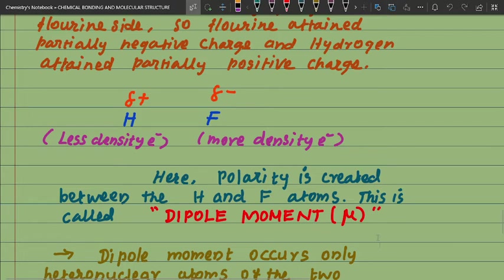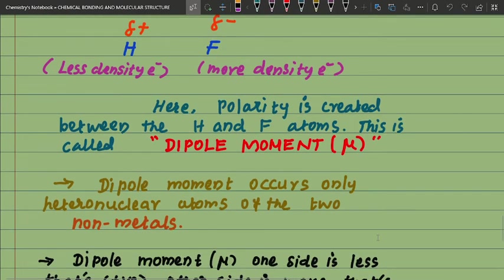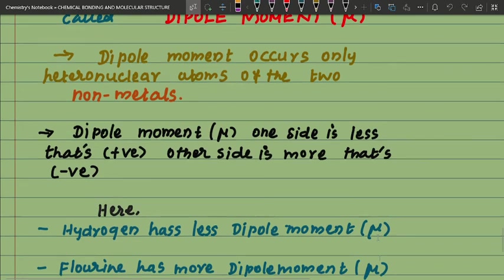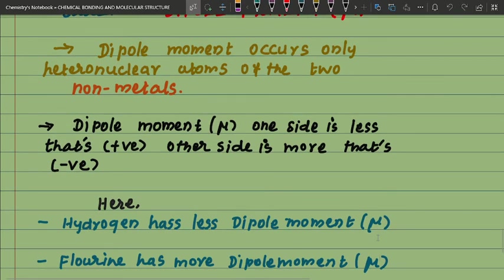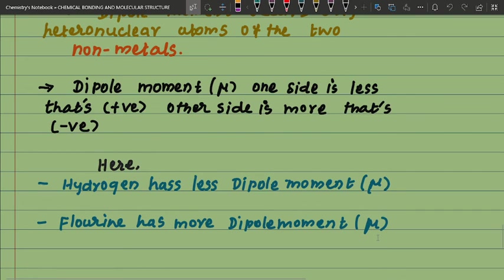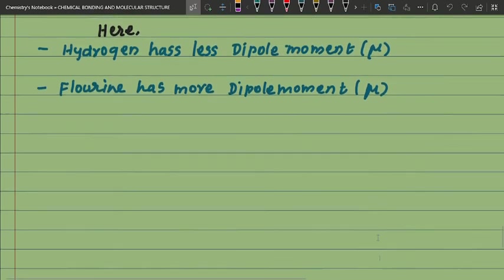Dipole moment occurs only in heteronuclear atoms of two non-metals. The dipole moment μ: one side is less, that is positive, and another side is more, that is negative. Here hydrogen has less dipole moment μ, and fluorine has more dipole moment μ.